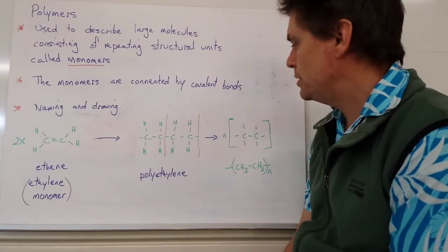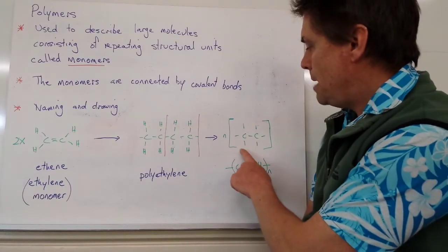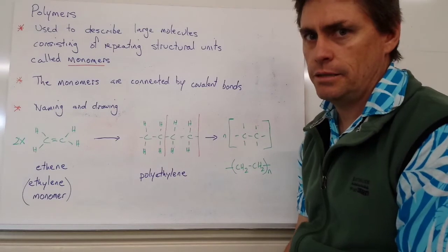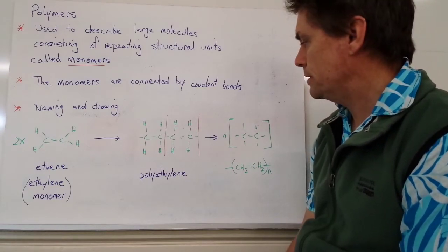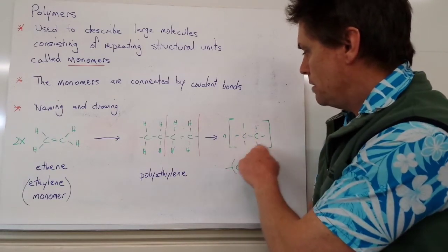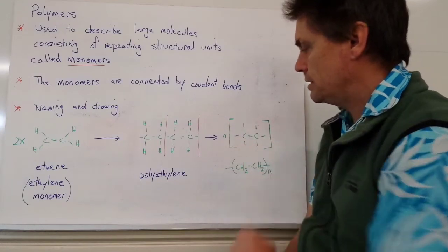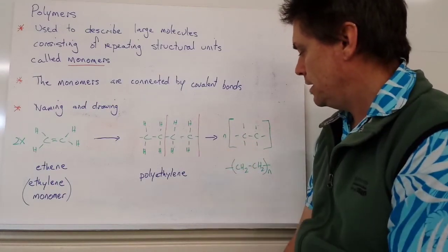Or it could be a low number, but generally it's a very high number because many of these units have joined together in the polymerization reaction process. We surround the monomer in a set of square brackets, and our n is on the left-hand side.